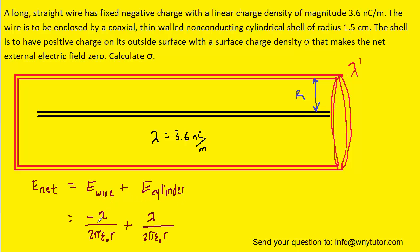Now it turns out that for lines of charge with uniform charge density, the electric field produced by that line of charge is given by the following expression. So we have that expression set up for both the wire and the cylinder.